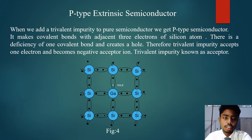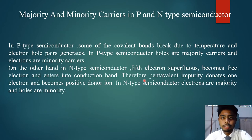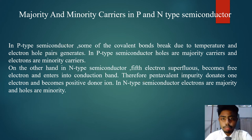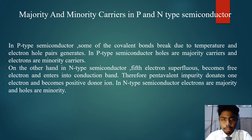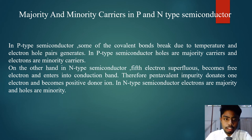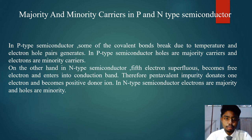In P-type semiconductors, some covalent bonds break due to temperature and electron-hole pairs are generated. In P-type semiconductors, holes are majority carriers and electrons are minority carriers. On the other hand, in N-type semiconductors, the fifth superfluous electron becomes a free electron and enters the conduction band. Therefore, the pentavalent impurity donates one electron and becomes a positive donor ion. In N-type semiconductors, electrons are majority carriers and holes are the minority carriers.